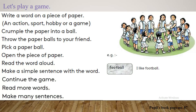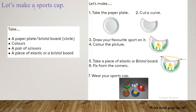Now take your workbook and turn to page number 89. Let's make a sports cap. You have to take these things to make this sports cap. What do you need? A paper plate or bristle board — you have to cut it into a circle. Colors. A pair of scissors. A piece of elastic or a bristle board.